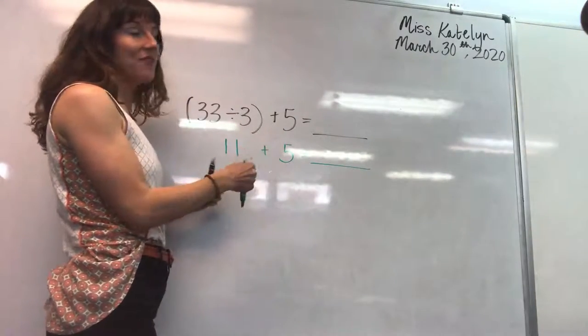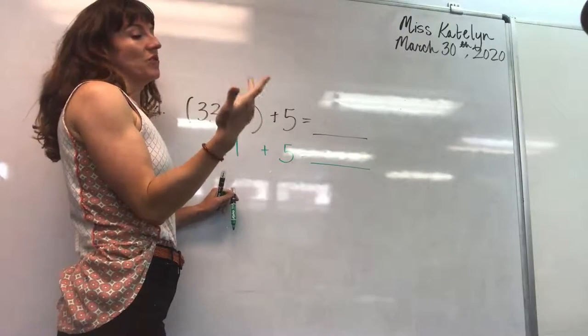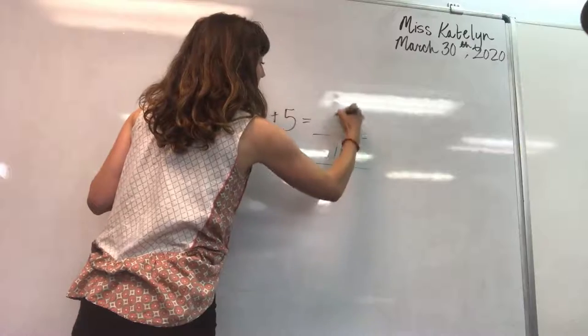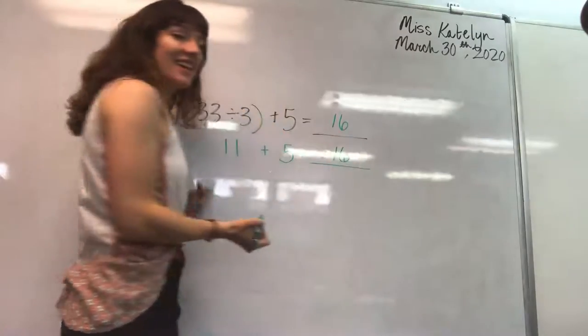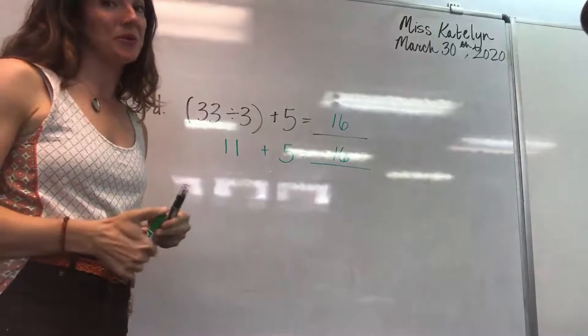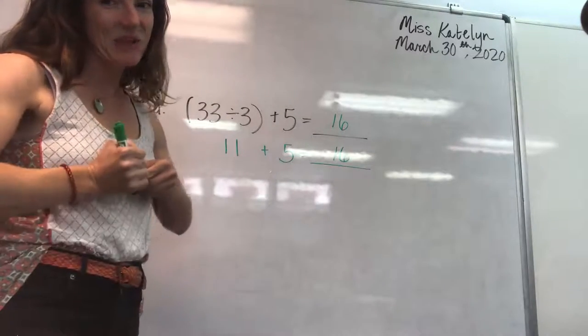33 divided by three equals. I hope you said 11. And then you continue to copy what you haven't done yet. Okay. Now your equation is 11 plus five. 11 plus five. 12, 13, 14, 15, 16. Okay. And then you put your answer in all the blanks. That's how you do three A, B, and C.